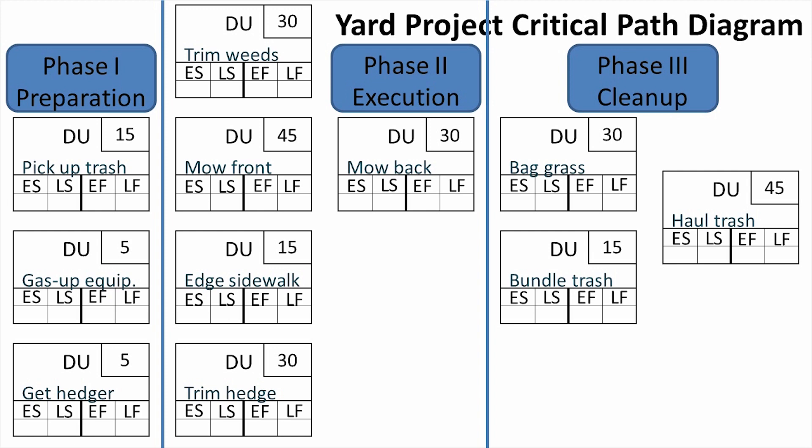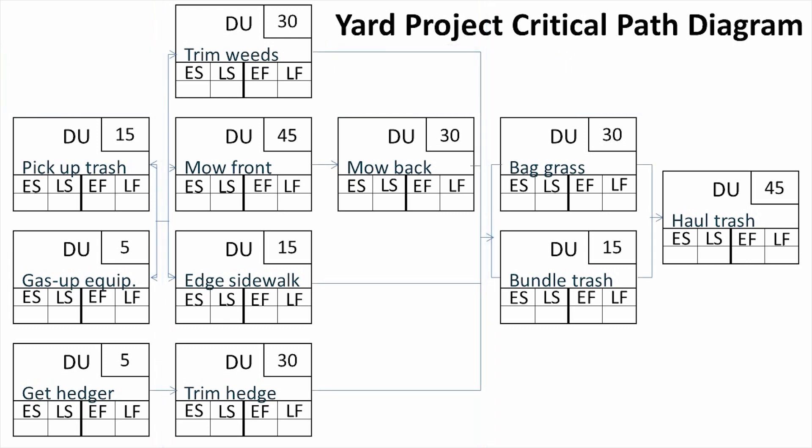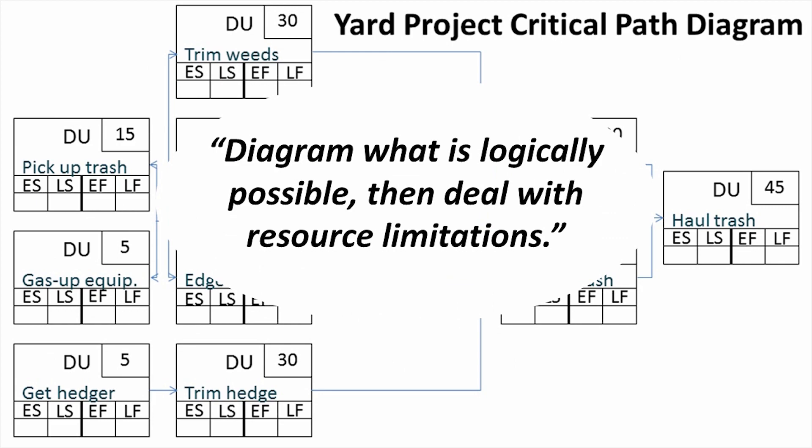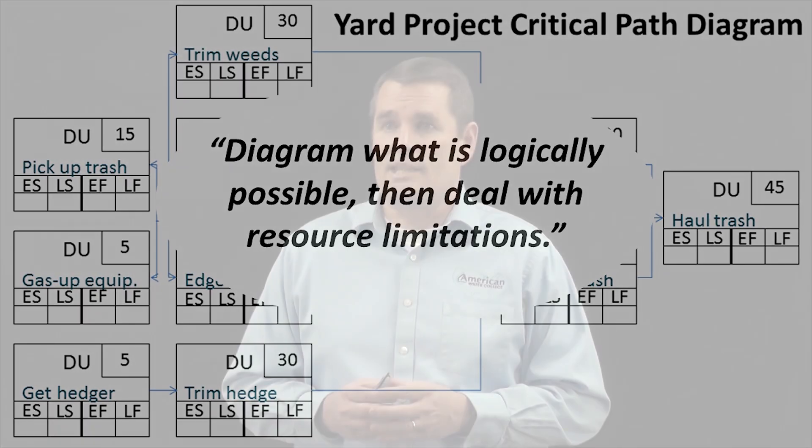The cleanup phase involves bagging the grass, bundling the trash, and hauling the trash to the dump. In putting this diagram together, I followed a rule of scheduling which says we should diagram what is logically possible and then deal with resource limitations. I scheduled this project as if I had help and wasn't working alone, because managing a project where you're the only participant isn't project management at all. So for planning your projects at work, plan them as if you have the necessary help, and then worry about resource limitations later.